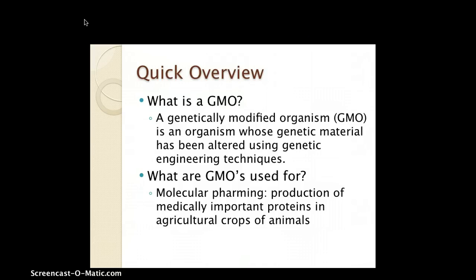So what are GMOs actually used for? GMOs can be used for molecular farming and the production of medically important proteins in agricultural crops or animals. Two other uses not mentioned on the slide — and pretty easy to remember — include cold resistance and pesticide resistance.